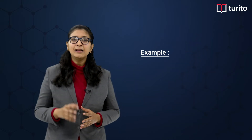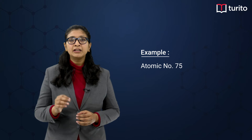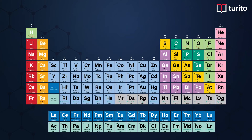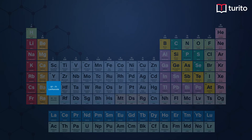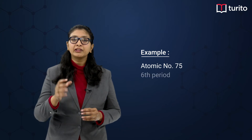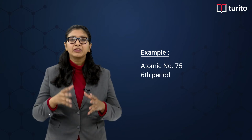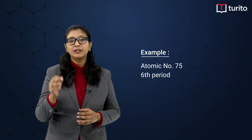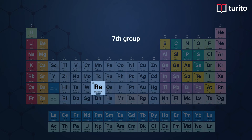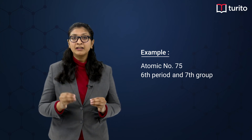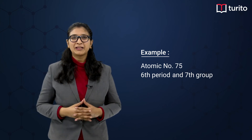Now, let us say I have a particular element with atomic number 75. If we are talking about 75, remember that from 57 to 71 belongs to the third group and sixth period. This means, as this number is close to that range, it will belong to the sixth period. And since till 71 it belongs to the third group, 75 will belong to the seventh group. This is how you predict the position of a particular element by knowing its atomic number.